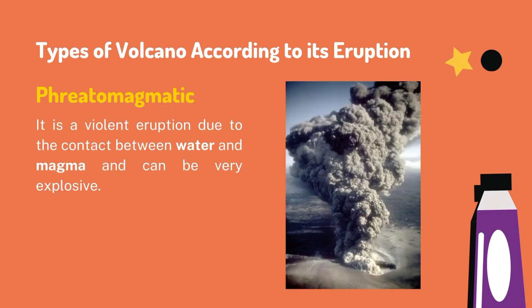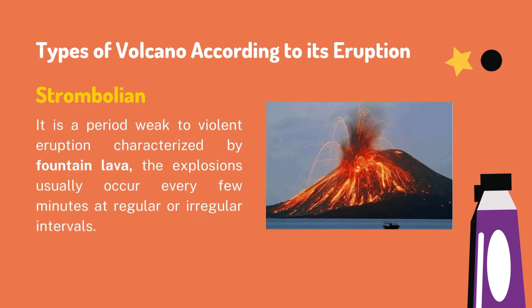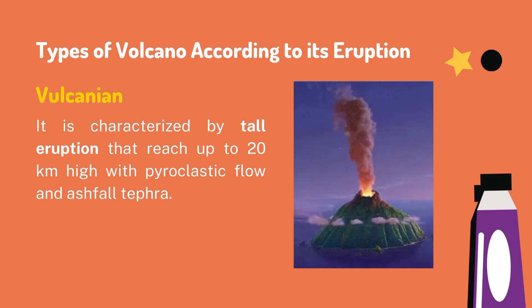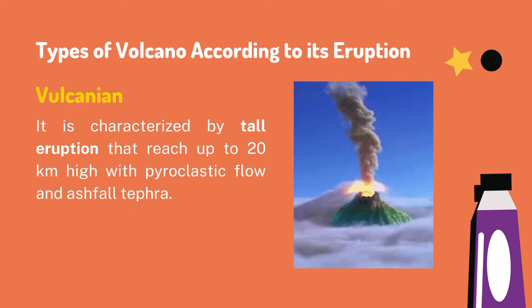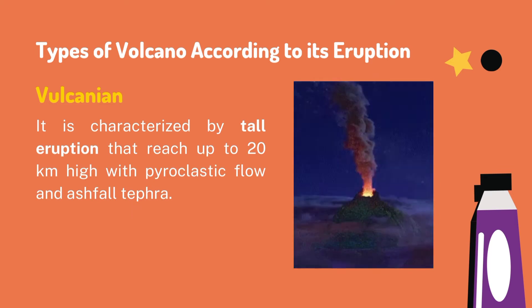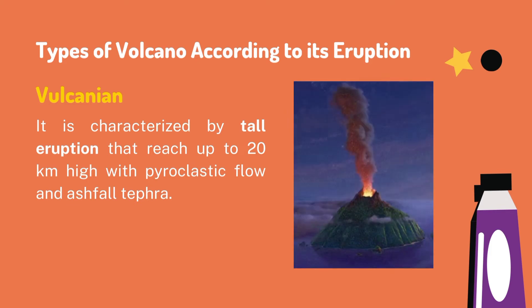Next, we have phreatomagmatic. It is a violent eruption due to the contact between water and magma. Strombolian — it is a period of weak to violent eruption characterized by fountain lava. The explosions usually occur every few minutes at regular or irregular intervals. The fourth one is what we call Vulcanian. It is characterized by tall eruptions that reach up to 20 km high with pyroclastic flow and ash and debris.